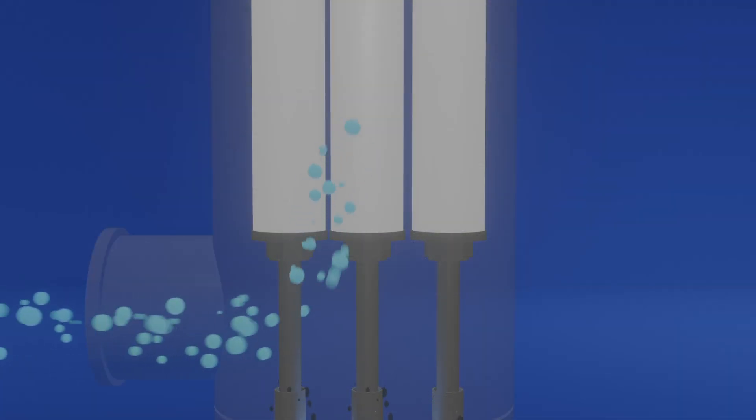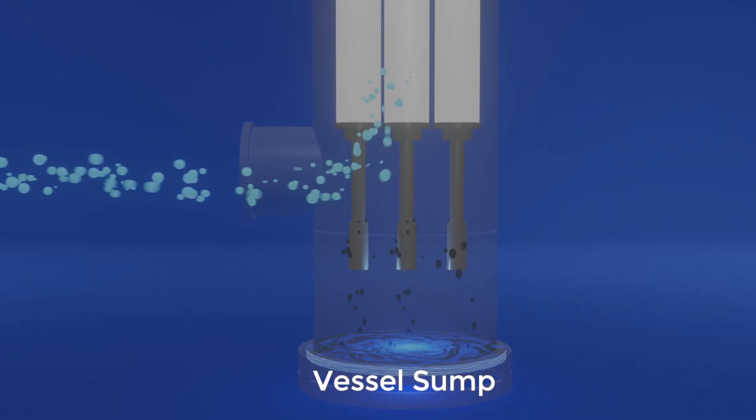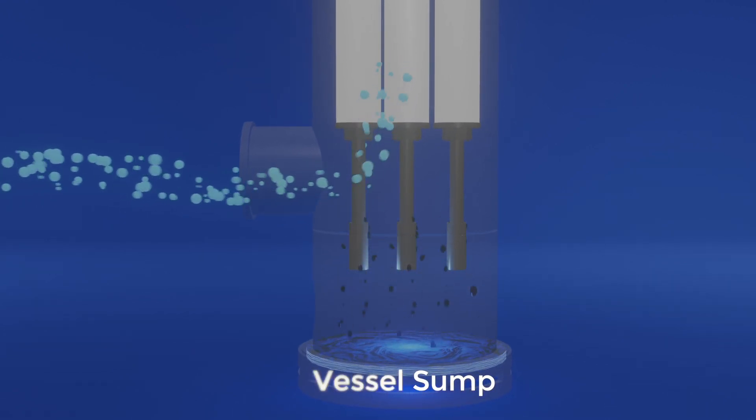As those droplets become larger, the continuous flow forces them to disengage from the fibres and drain into a sump held at the bottom of the main element core and then to a vessel sump at the bottom of the housing.